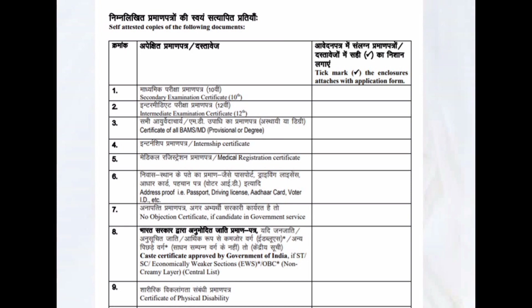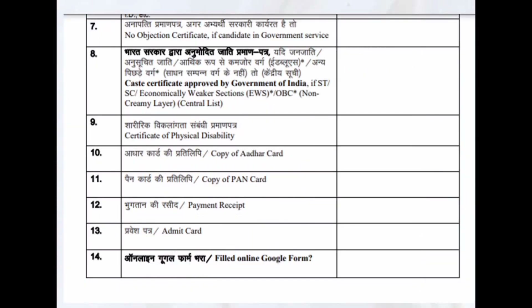The checklist: 10th marks card — compulsory; 12th marks card — compulsory; all BAMS marks cards and degree certificates to be attached. I would suggest keeping all marks cards as well as degree certificates — if the degree is not available, a provisional is also fine. Internship completion certificate, medical registration certificate — if original not available, provisional is accepted. Address proof with multiple options. No Objection Certificate — if in government service, otherwise write not applicable. Caste certificate if applicable, PH certificate if applicable. Copy of Aadhaar card and PAN card — very important. Payment receipt — photocopy of online payment to be attached. Admit card to be attached. Confirm that you have filled the Google form — compulsorily yes.